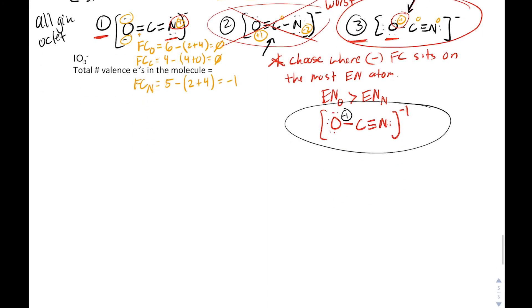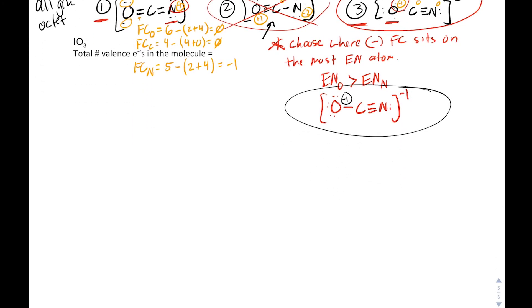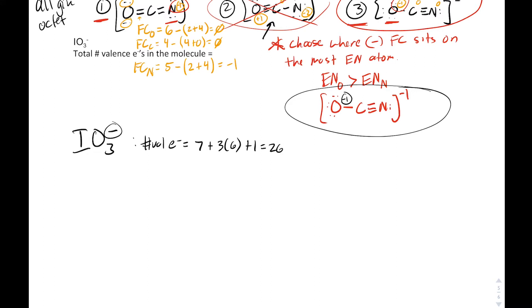Our final example is writing out the Lewis structure for IO3 minus. First, figure out the number of valence electrons: seven for iodine, three oxygens each contributing six, and one more for the negative one charge, giving us a total of 26 valence electrons.